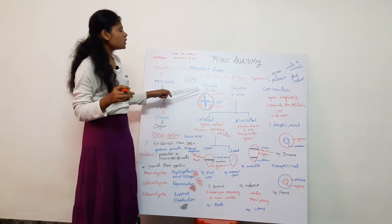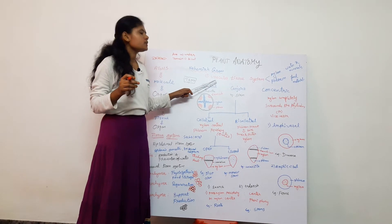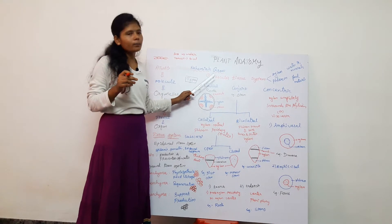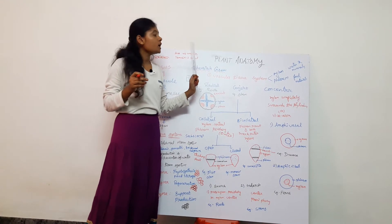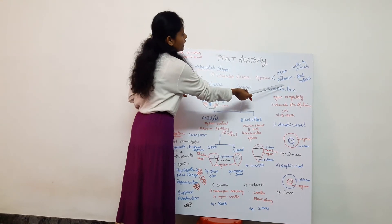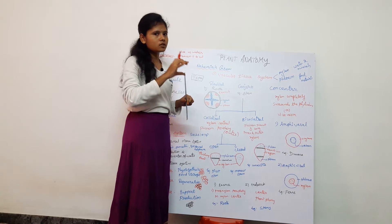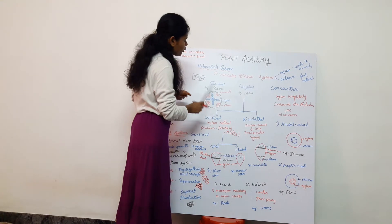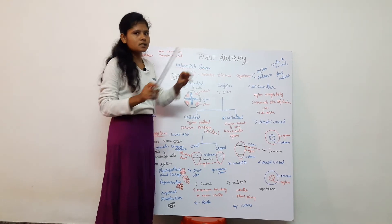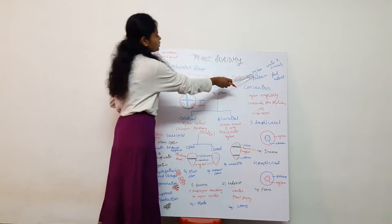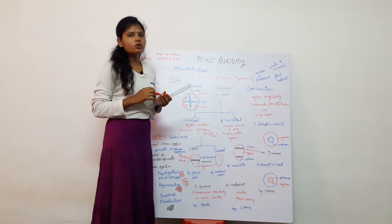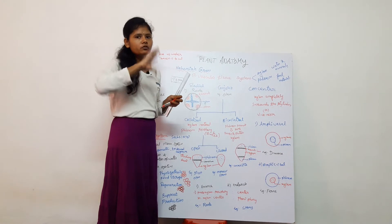The third main tissue system is the vascular tissue system. This is the most important topic. The vascular tissue system consists of xylem and phloem. Xylem conducts water and minerals, supplying them fully to the plant.